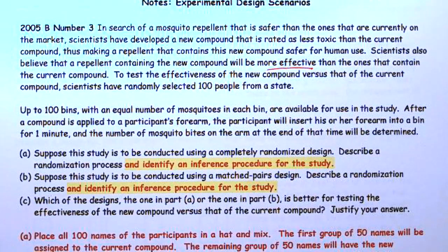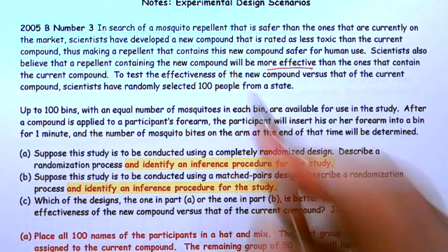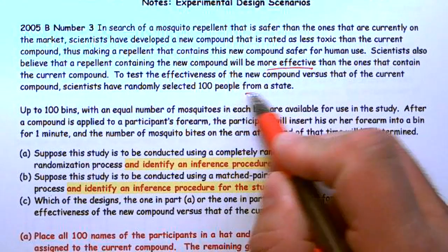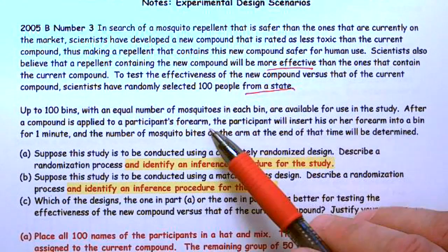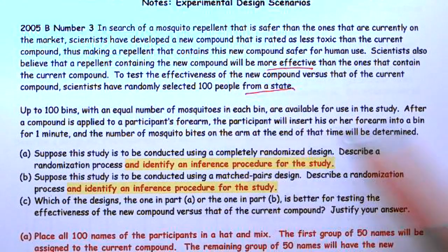To test the effectiveness of the new compound versus the current compound, scientists randomly selected 100 people from a state. There are up to 100 bins with an equal number of mosquitoes, each available for use in the study. After a compound is applied to a participant's forearm, the participant will insert their forearm into a bin for one minute, and the number of mosquito bites at the end of that time will be determined.